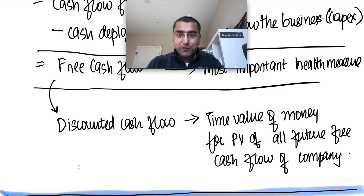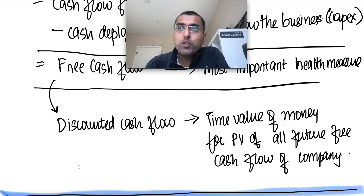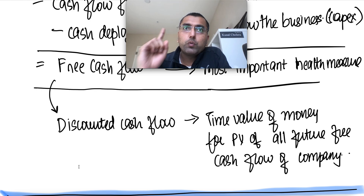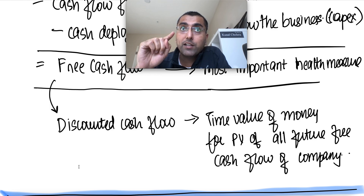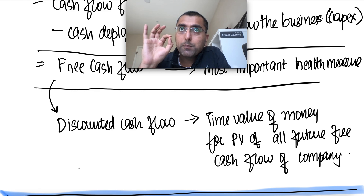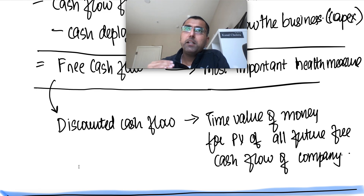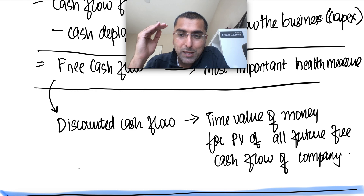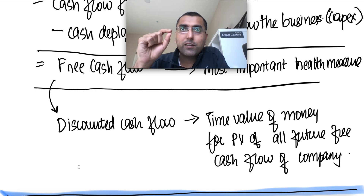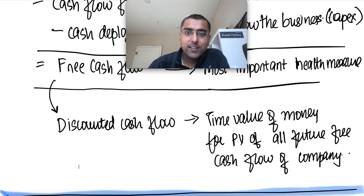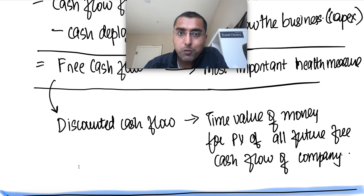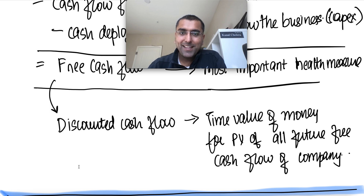So I went through chapter one in 15 minutes. The biggest and most useful new concept was sources and uses of cash. We pretty much revised accounting in a super fast way. I highly encourage you to do accounting first and then get into this series — it will be even more useful, valuable, and enlightening.